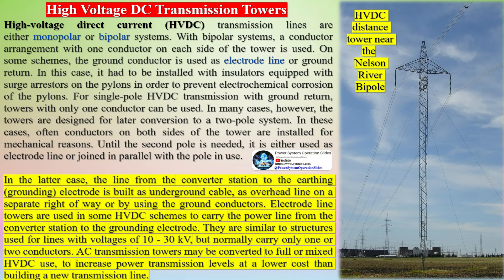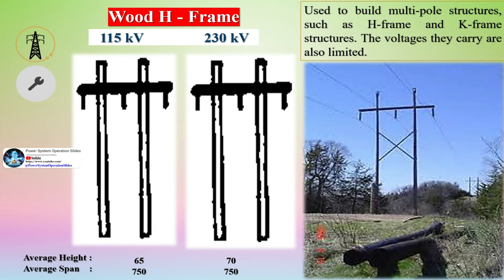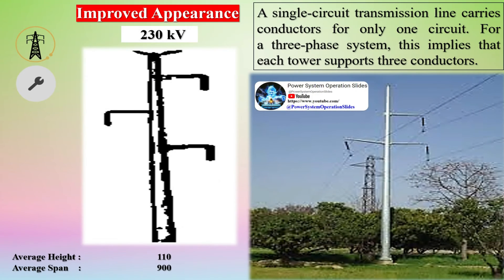HVDC transmission lines are either monopolar or bipolar systems. With bipolar systems, a conductor arrangement with one conductor on each side of the tower is used. On some schemes, the ground conductor is used as an electrode line or ground return, requiring insulators equipped with surge arresters on the pylons to prevent electrochemical corrosion. For single-pole HVDC transmission with ground return, towers with only one conductor can be used. The line from the converter station to the earthing electrode may be built as underground cable, overhead line on a separate right-of-way, or using the ground conductors.